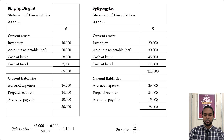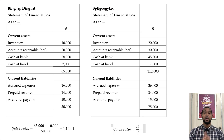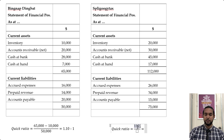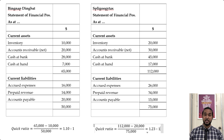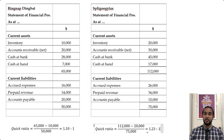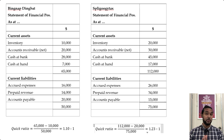Now let's calculate the quick ratio for Spaghetti Tax. We do 112,000 subtract 20,000 divided by 75,000, which gives approximately 1.23 to 1. They have a dollar and 23 cents of current assets excluding stock available to pay off every dollar of current liabilities. Spaghetti Tax appears more liquid than Bignap Dingbat based on the quick ratio, and this is a consistent result with what we saw from the current ratio.